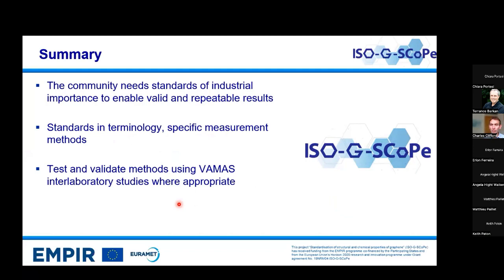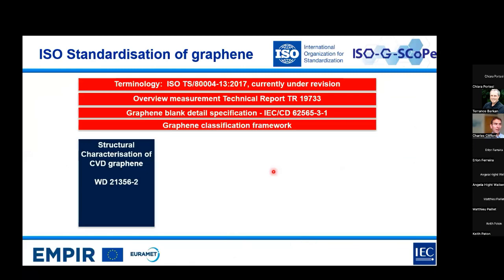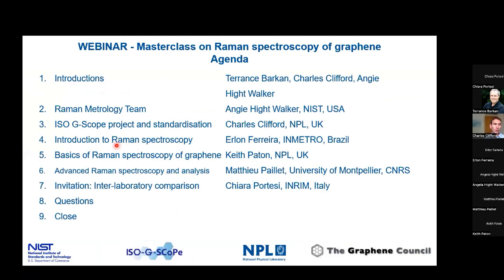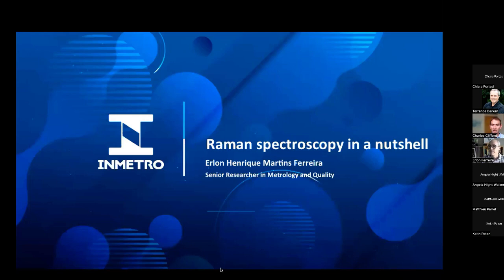To summarise briefly: the community needs documentary standards of industrial importance to enable valid and repeatable results so we know what our black material is. We need standards in terminology and in measurement and characterisation. We test and validate these methods using VAMAS interlaboratory studies where appropriate. Thank you for listening. I acknowledge the ISO G Scope project for funding. We will now move on to our next speaker — Erlon from INMETRO in Brazil — to give us an introduction to Raman spectroscopy.